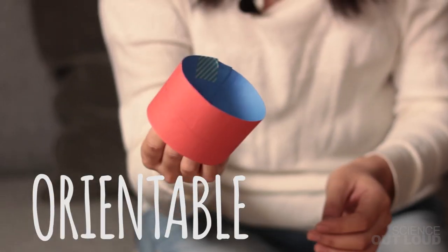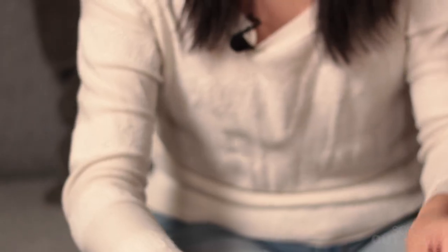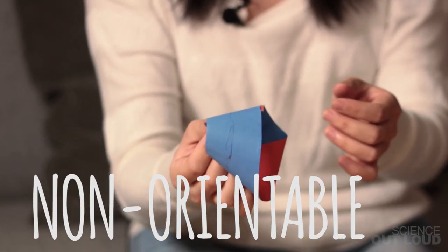The cylinder is an orientable surface, while the Mobius strip is a non-orientable surface.